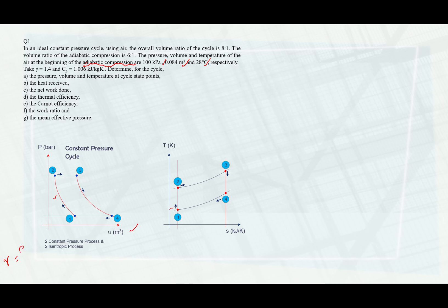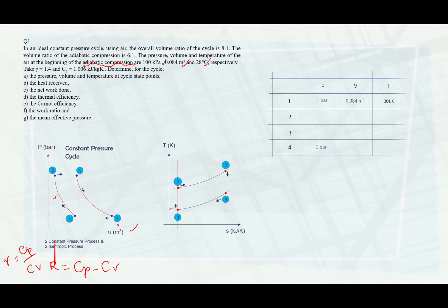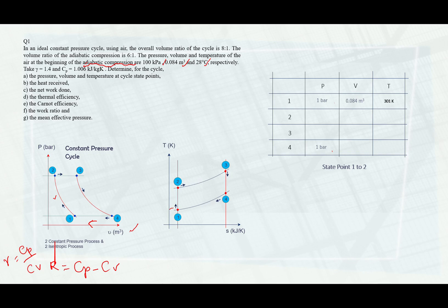Gamma is actually the ratio of CP to CV. Or you can use the relationship where R equals CP minus CV, which you should have learned earlier. Now in the table, pressure P1 is 1 bar. P1 and P4 are the same because from 4 to 1 it is a constant pressure process, so P1 and P4 are both 1 bar. Given the volume is 0.084 metre cubed and temperature is 28°C, that gives 28 plus 273 equals 301 Kelvin.